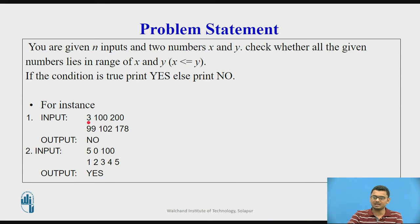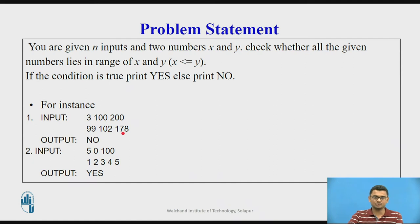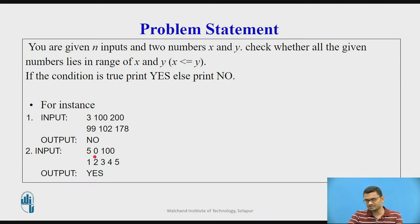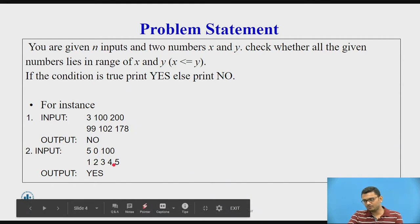For example, say we take three numbers with 100 as the lower limit and 200 as the upper limit. Ninety-nine falls out of the range because 100 is the lower limit. 102 and 178 fall in the range, but the output is no since 99 is out of range. Similarly, if we have five numbers with 0 as the lower limit and 100 as the upper limit, values 1, 2, 3, 4, and 5 all fall in range, so we print yes.